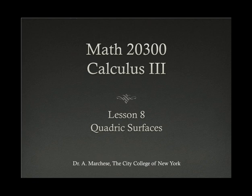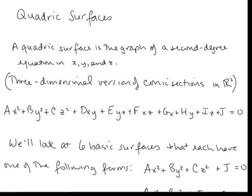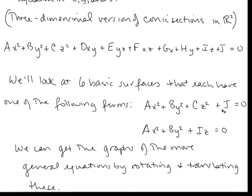This is lesson 8 in our Calculus 3 series: Quadric Surfaces. A quadric surface is the graph of a second degree equation in x, y, and z. This is a three-dimensional version of conic sections in the plane. Our second degree equation in x, y, and z in general looks like this, but we're going to concentrate on six basic surfaces that each reduce to a simpler form. We can get the graph of more general equations by rotating and translating the ones we're going to look at.